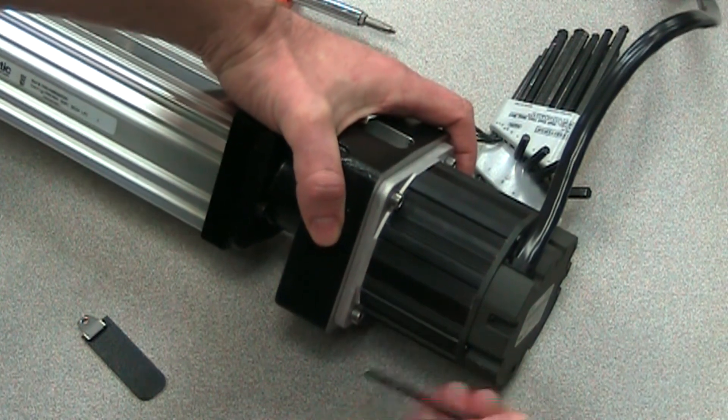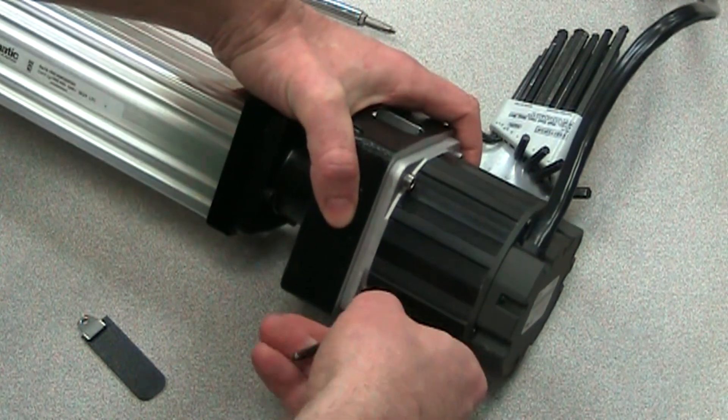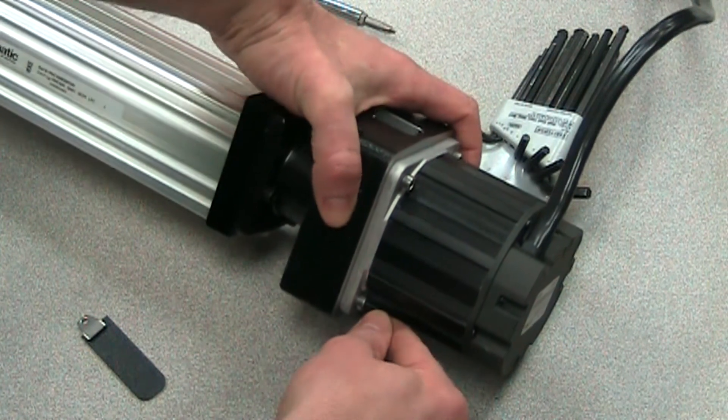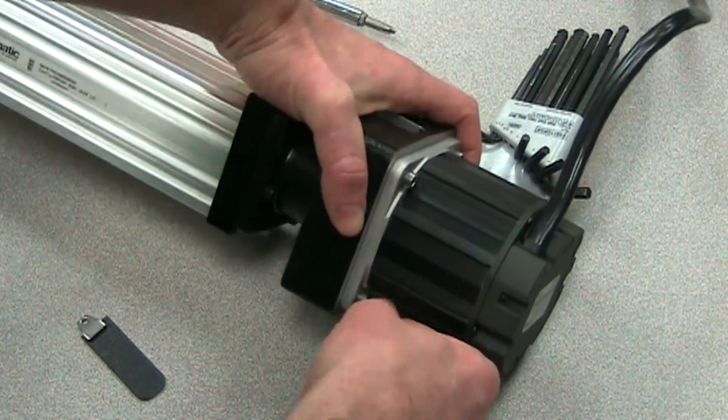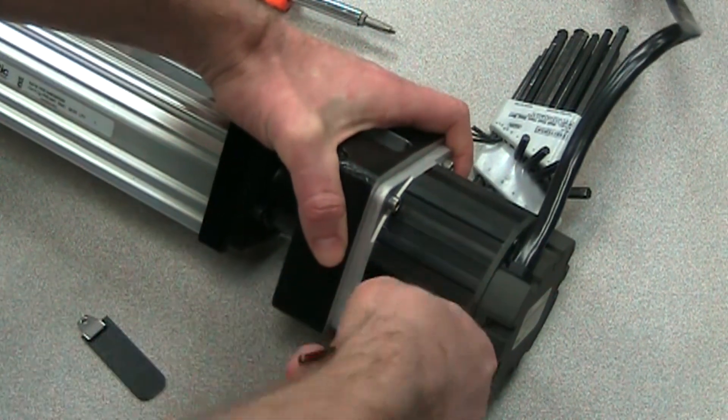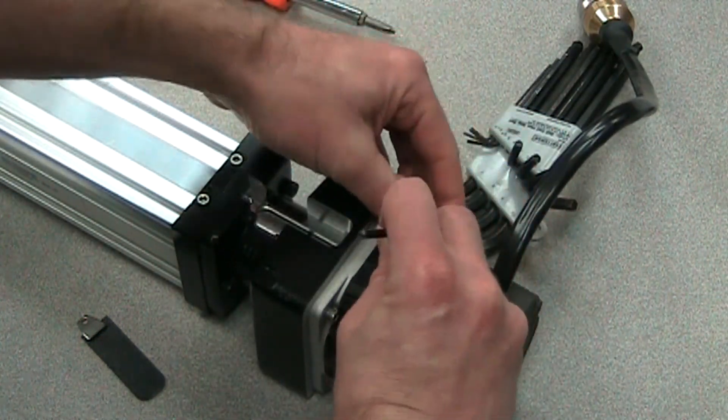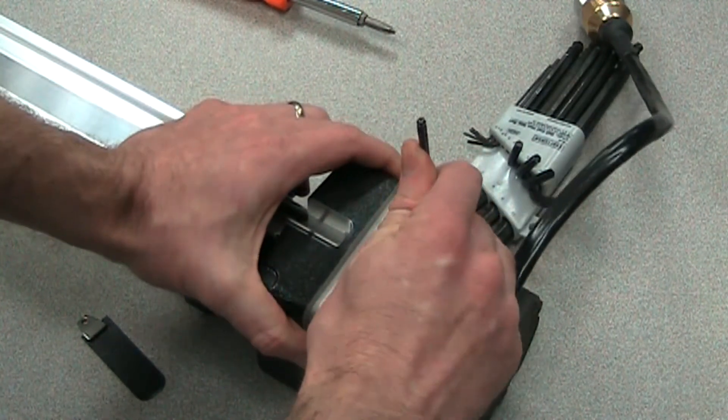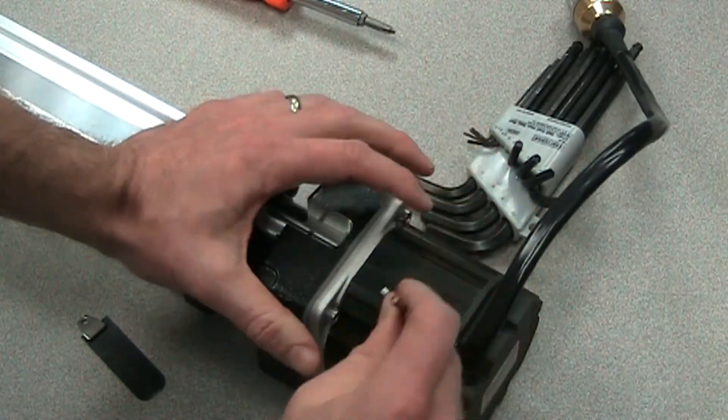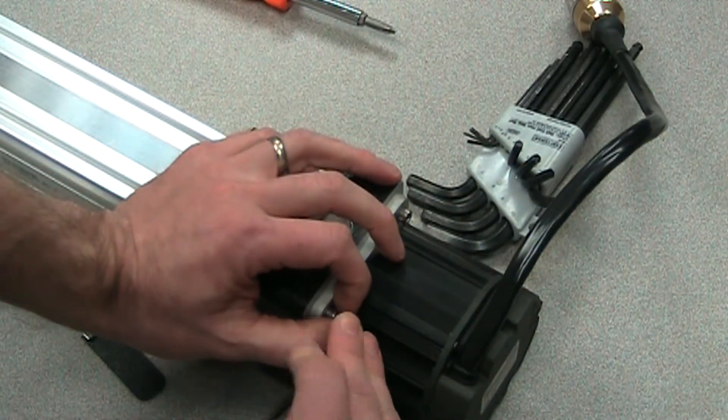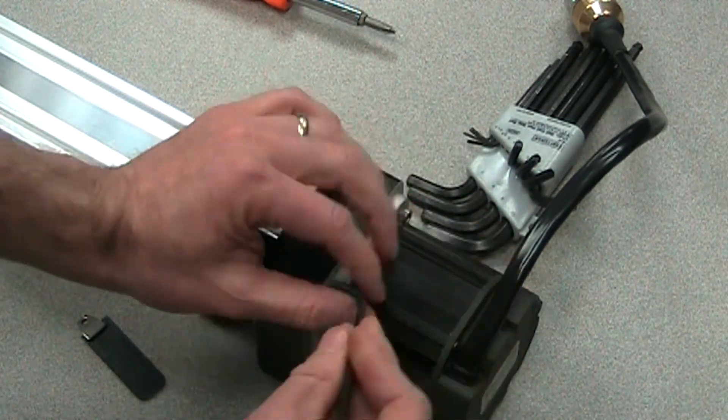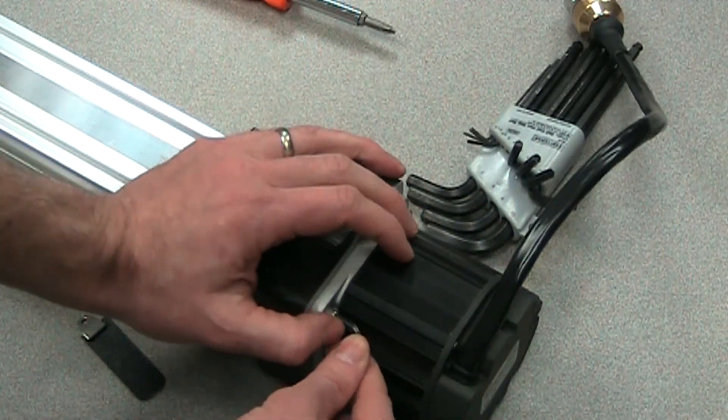And this will ensure that the motor is properly seated on the housing as well. So we'll want to tension these to a good setting. It's not as important to torque these screws as much as it is for the cross bolt screws on the coupler itself, but it is good to have these tightened to an equal amount of torque.